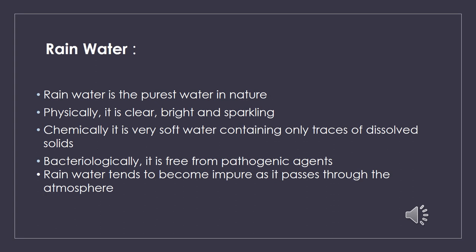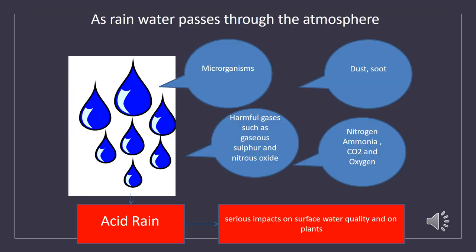Rainwater tends to become impure as it passes through the atmosphere. It picks up suspended impurities such as dust, soot, micro-organisms, and gases including ammonia, nitrogen, oxygen, and carbon dioxide. Gaseous sulfur and nitrous oxide gases react with atmospheric water, forming dilute solutions of sulfuric acid and nitric acid. The precipitation of these acids, called acid rain, has a serious impact on surface water quality and even on plants.